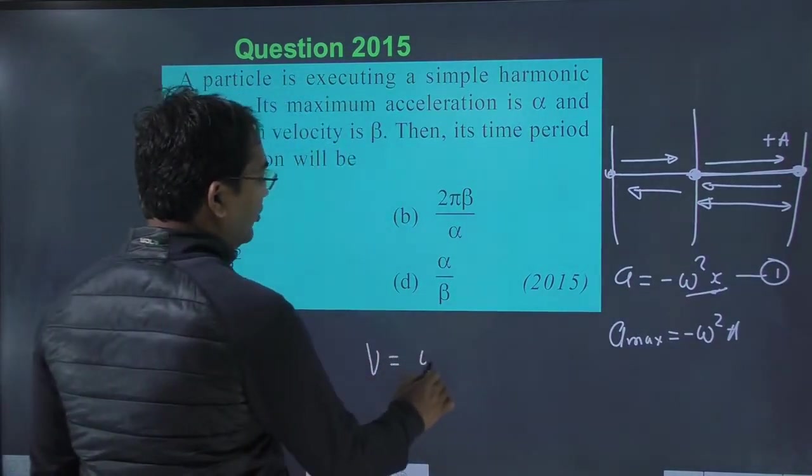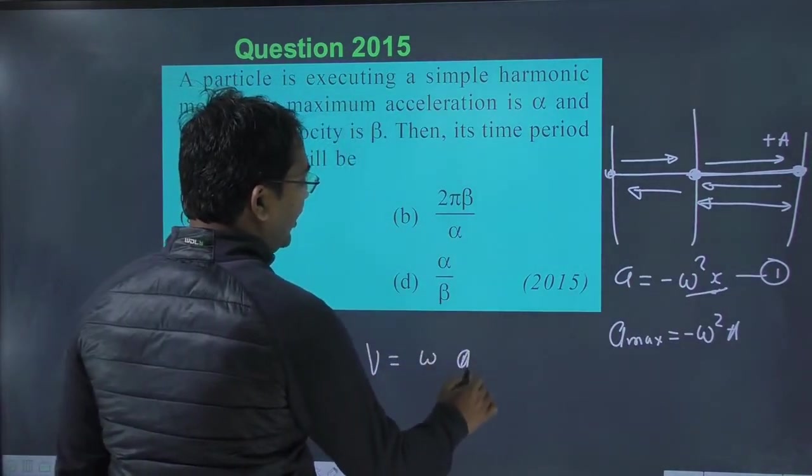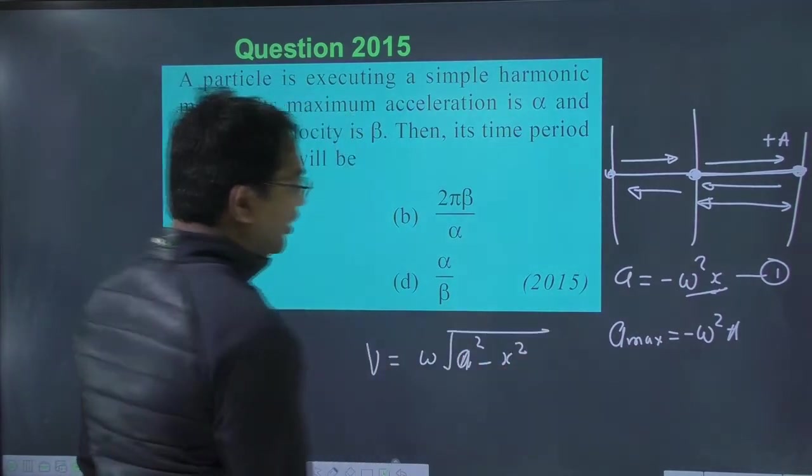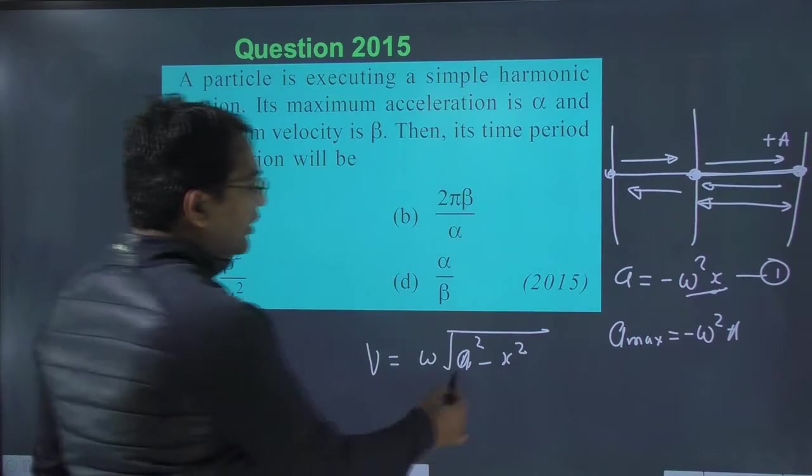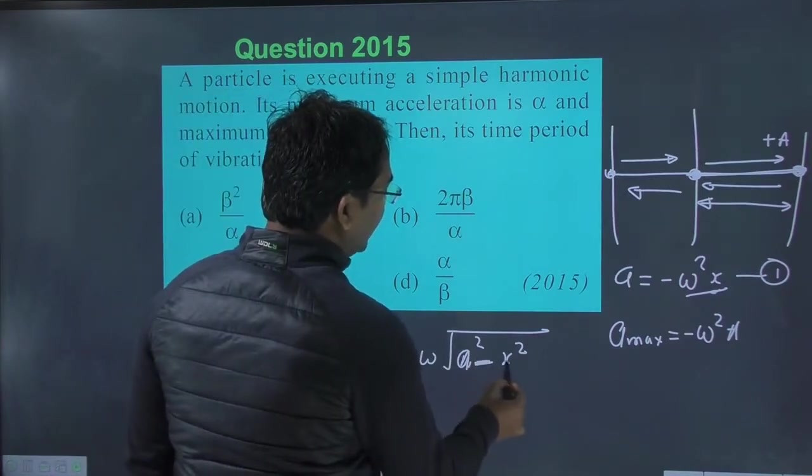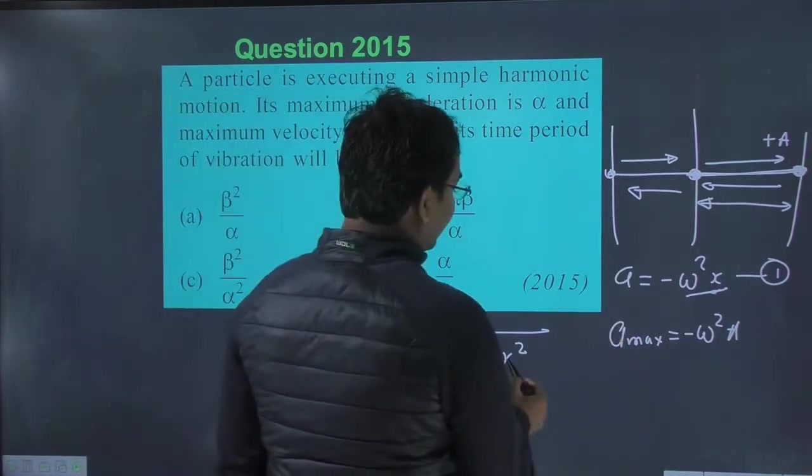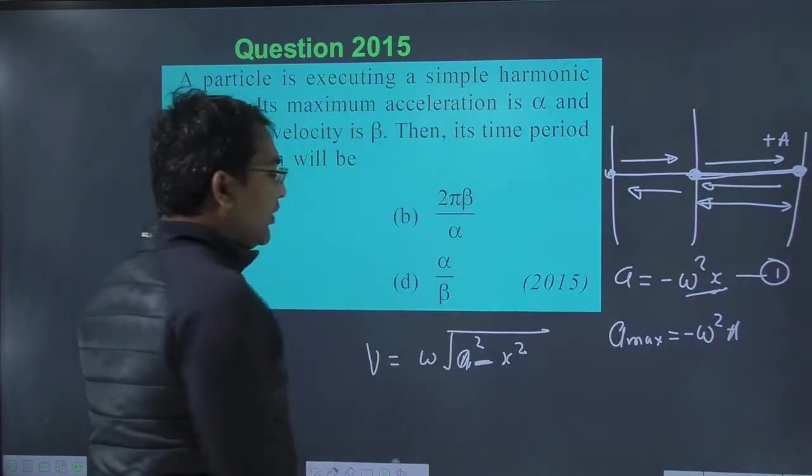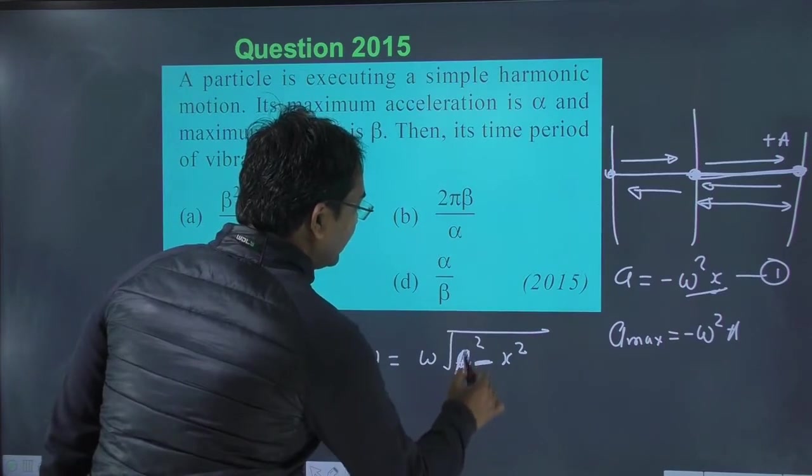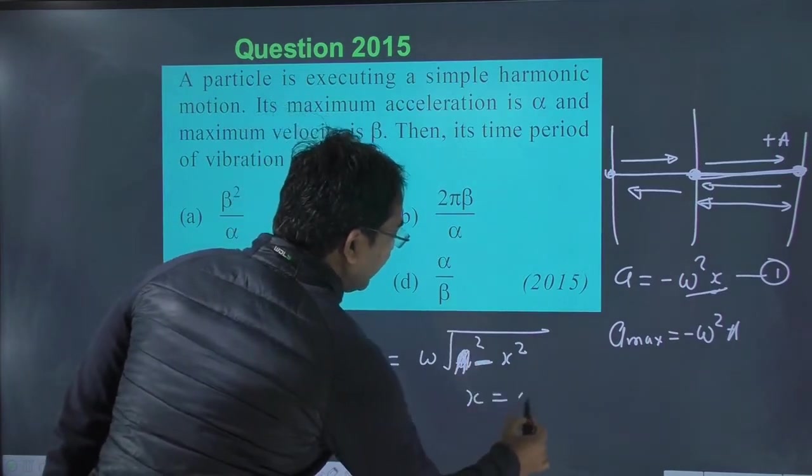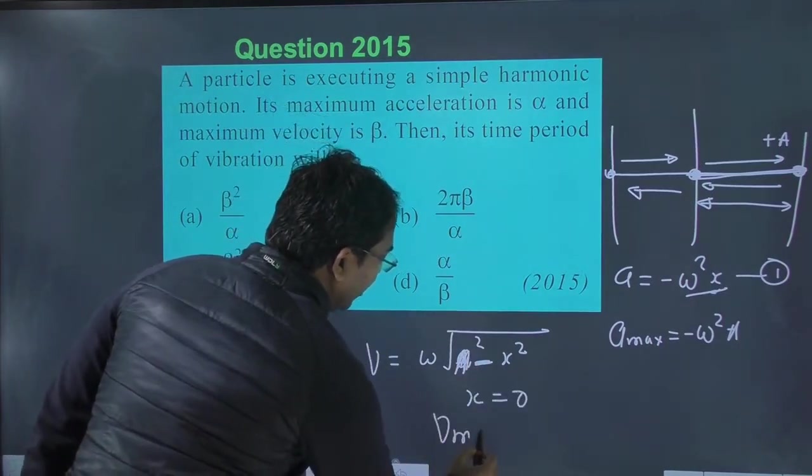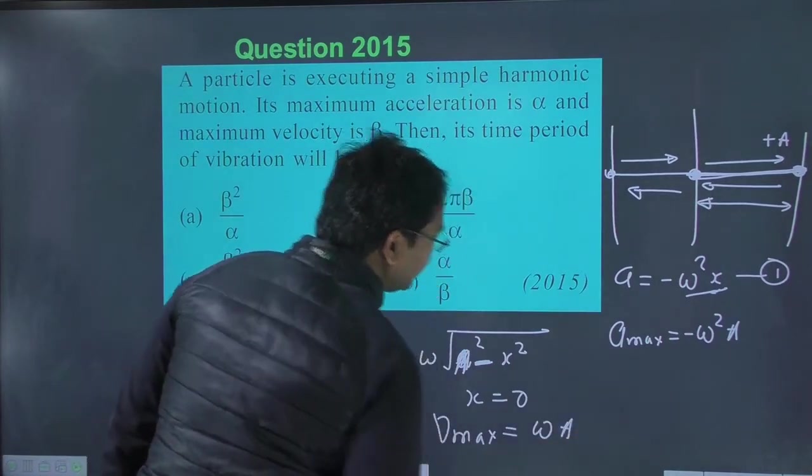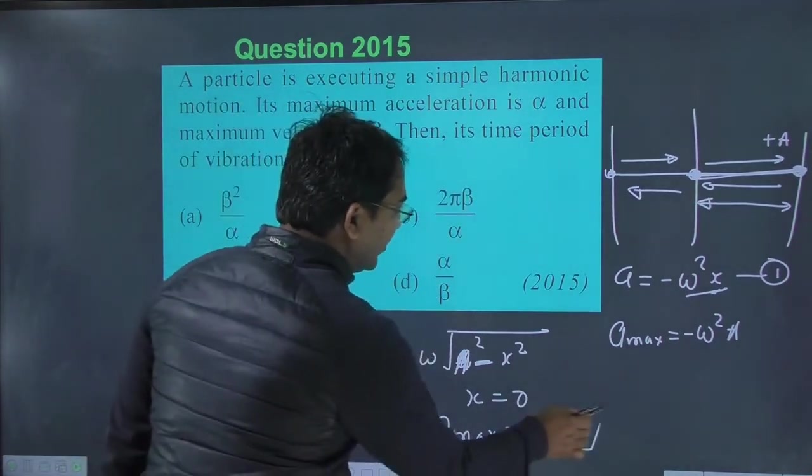Chalo. Velocity position dependent lago. Omega, amplitude a ka square minus x ka square under root. Ab velocity maximum kab hogi. Bolo. Velocity maximum hogi jab x ki value zero hogi. Ab x, a ke barabar ho jaye ga amplitude ke, tab to velocity zero ho jayegi. To x is equal to zero par velocity maximum hoti hai. Mean position pe. Omega capital a. This is the maximum velocity.